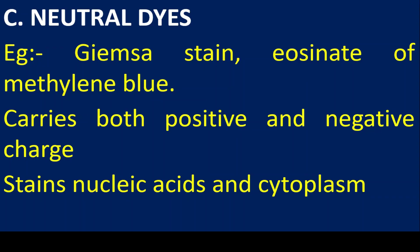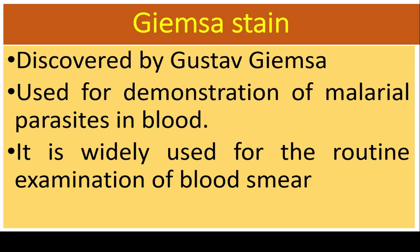There is one more type of dye known as neutral dyes. An example is Giemsa stain, which is an eosinate of methylene blue. Neutral dyes carry both positive and negative charges. They stain nucleic acids and cytoplasm. Giemsa stain was discovered by Gustav Giemsa and is widely used for demonstration of malaria parasites in blood, as well as for protein examination of blood smears.